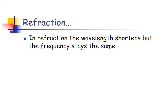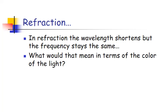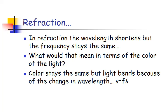So in refraction, again, the wavelength shortens, but the frequency stays the same. And what would that mean for the color of the light? Well, if the frequency stays the same, it's going to have the same color. It's just the wavelength that's going to change. And then with that change in wavelength, the speed changes.